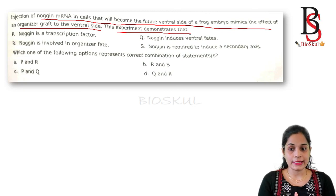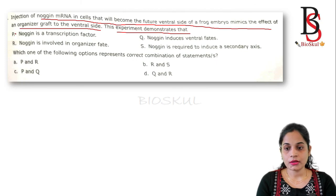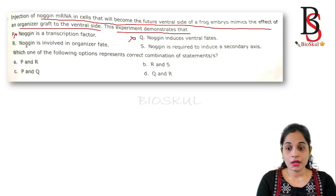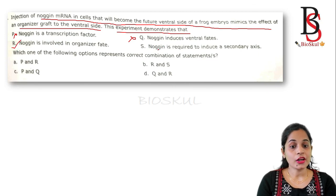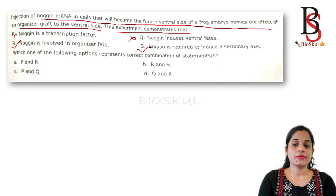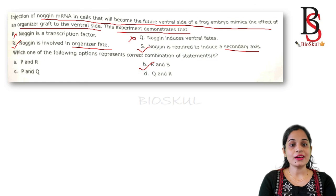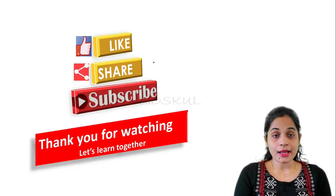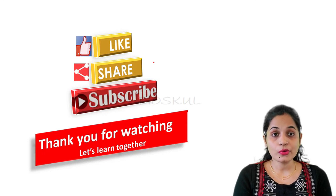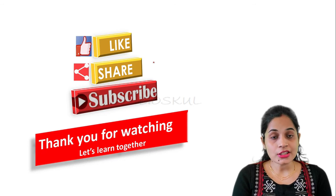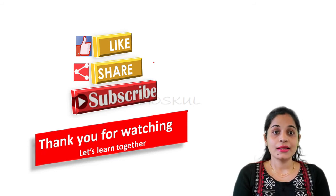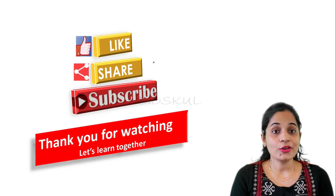The last question: Injection of noggin mRNA in cells that will become the future ventral side of a frog embryo mimics the effect of an organizer graft into the ventral side. Option analysis: noggin is a transcription factor — wrong; noggin induces ventral effects — wrong; noggin is involved in organizer fate — correct; noggin is required to induce the secondary axis because it acts as an organizer — correct. The correct combination is option B. Thank you so much for watching till the end. This video will help you solve questions related to organizer and amphibian axis determination. If you have any doubts, please comment down below.